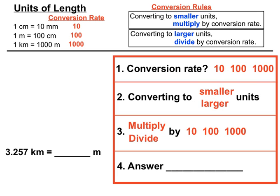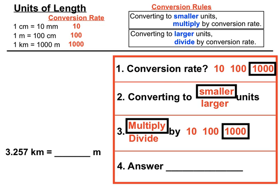Next example: working with kilometres and metres — the conversion rate is 1000. We're converting from kilometres into metres, which is converting to smaller units, so we multiply by 1000. When multiplying by 1000, we move the decimal point three places to the right. So 3.257 kilometres is equivalent to 3257 metres.